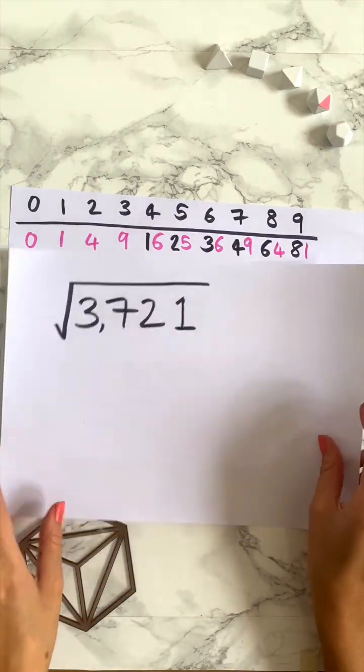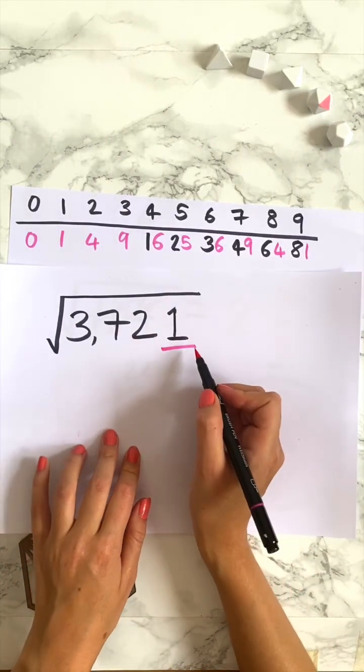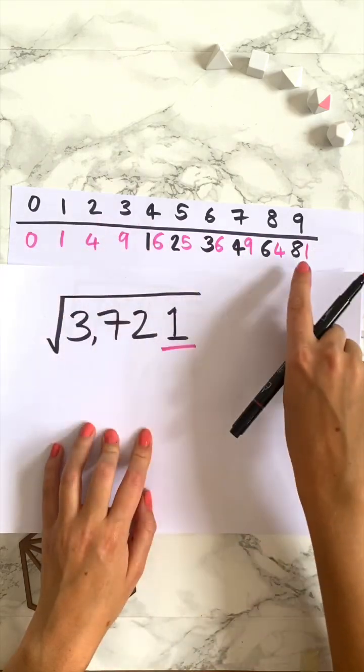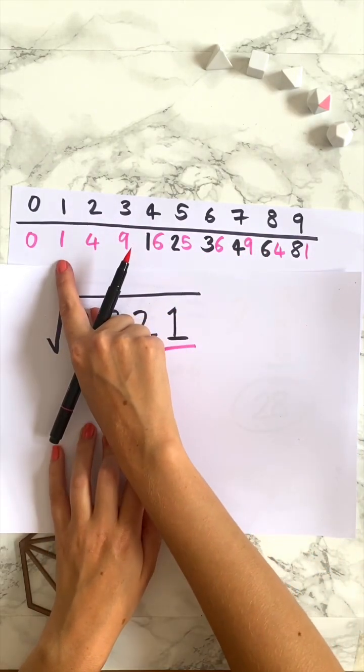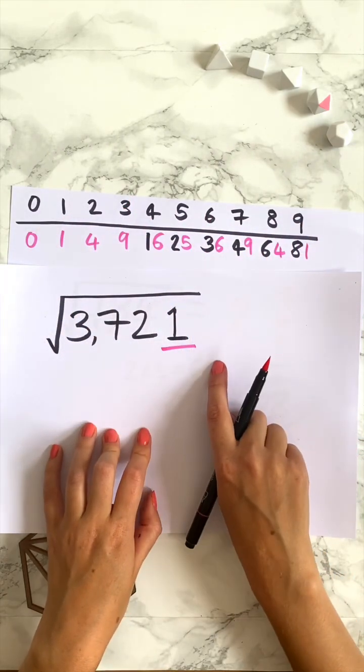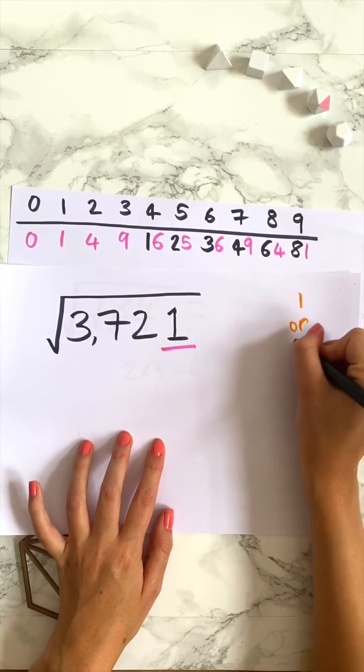Let's try one more example. So Dave gives you this instead. We're going to do the same method. We look at the last digit, in this case a 1. We look at the square numbers with final digit 1. So we've got 81 and 1 and these correspond to 9 and 1 respectively. So our final digit of our answer is either going to be 1 or 9.